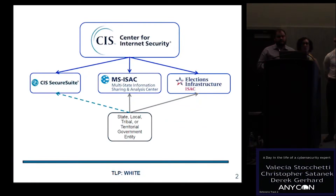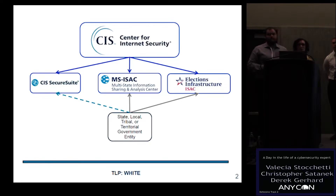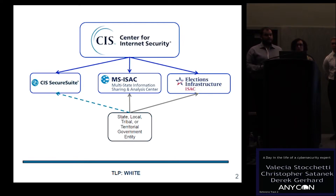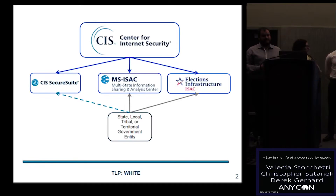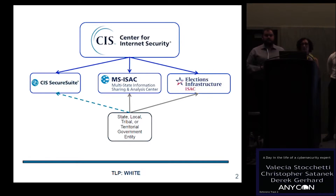Just a quick overview of who we are. We're the Center for Internet Security, a nonprofit that encompasses a whole slew of different services. Under CIS we have three divisions: the Multi-State ISAC, which services state and local governments; the Elections Infrastructure ISAC, which services election officials and associated vendors; and CIS Secure Suite — our benchmarks and controls team. Secure Suite has a dotted line to state, local, territory, and tribal governments because they get a free membership as part of the MS-ISAC.